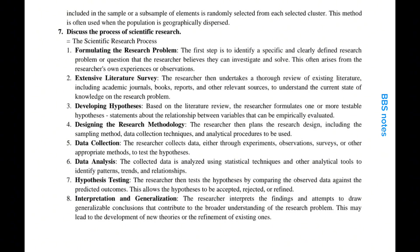Discuss the process of scientific research. The scientific research process: Step 1, formulating the research problem. The first step is to identify a specific and clearly defined research problem or question that the researcher believes they can investigate and solve. This often arises from the researcher's own experiences or observations.